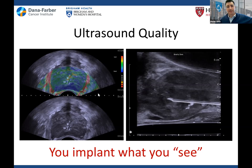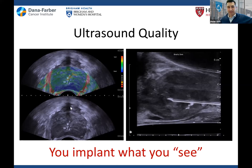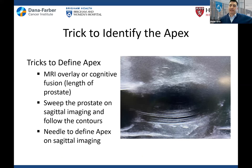Ultrasound quality is important. I've been doing this for almost 20 years and started with the old BK ultrasounds where you didn't see a whole lot — we were implanting the seminal vesicles all the time because everything melded together. There was a venous plexus on the old ultrasounds that looked a whole lot like a prostate. Now we can see nice distinctions, so having a good ultrasound is important — especially starting a program. Invest in a good ultrasound because you implant what you see.